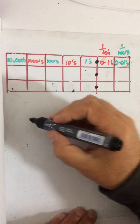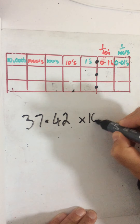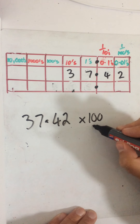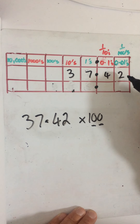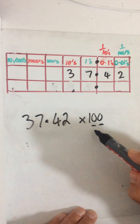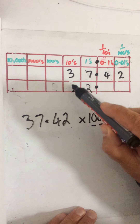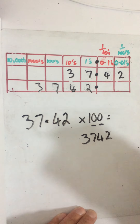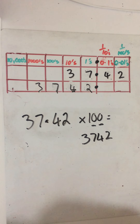Let's count on with the hundreds. Say for example I've got 37.42 and I'm multiplying that by 100. If I put my 37.42 in the grid and multiply by 100 — 100 has two zeros, so for each zero I move the numbers one place to the left. There are two zeros, so it goes two places to the left. I know the numbers are getting bigger because I'm multiplying. That becomes 3742.